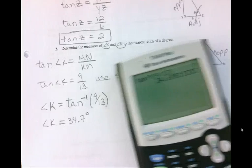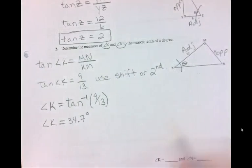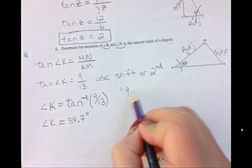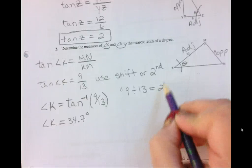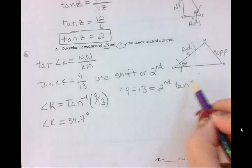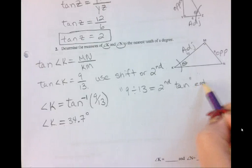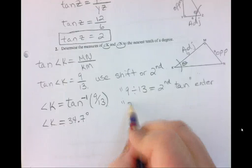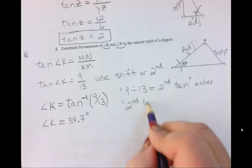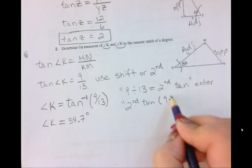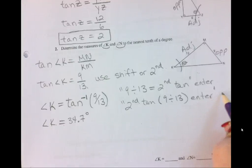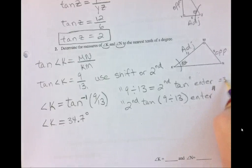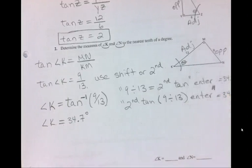So I'm going to round that off to 34.7 degrees. And I'll write out the two different key sequences that are necessary. So you could either go 9 divided by 13 equals, and then have the second and then the tan button, and then you hit enter. Or you could have the second tan and then a bracket 9 divided by 13, and then enter. And that gives you both the same answer, 34.7 degrees.